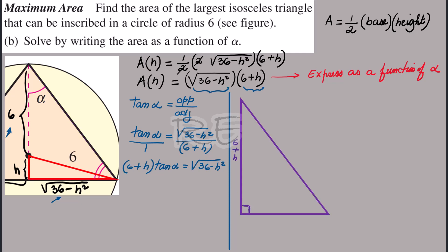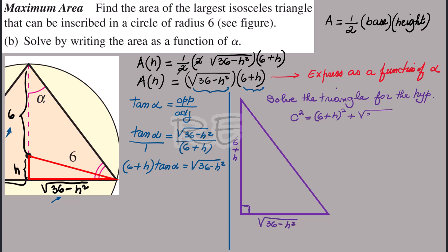We still need a replacement for 6 + h, so we're going to solve the triangle for the hypotenuse. The hypotenuse squared is equal to (6 + h)² plus (√(36 − h²))².